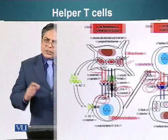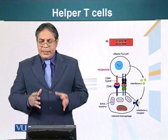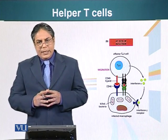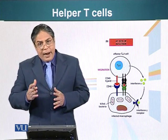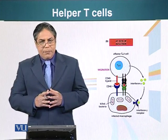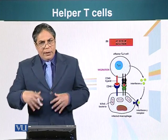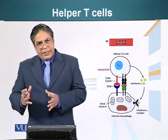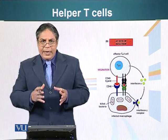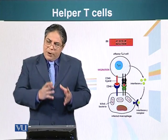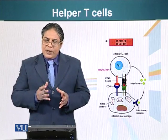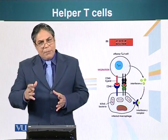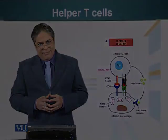We have just seen how dendritic cells not only activate helper T cells, but guide them towards a specific lineage. In the next module, we are going to see how dendritic cells can guide helper T cells into a different type of lineage, which is the helper T cell type 2 lineage.